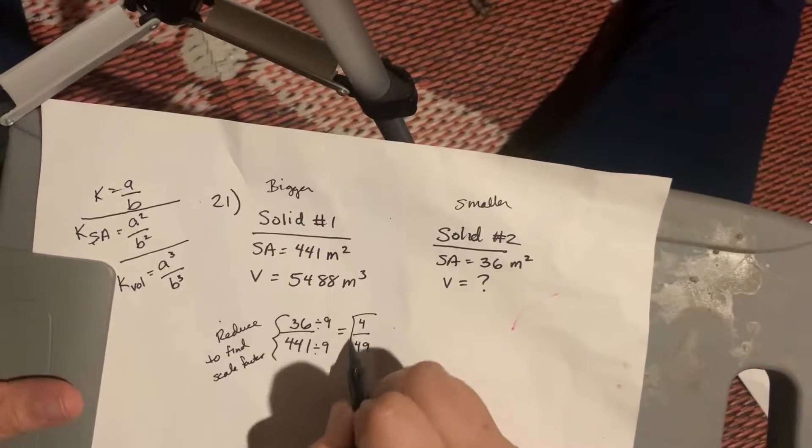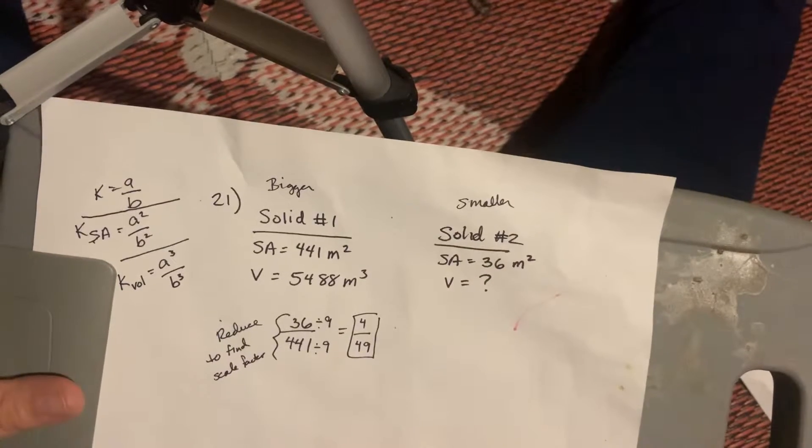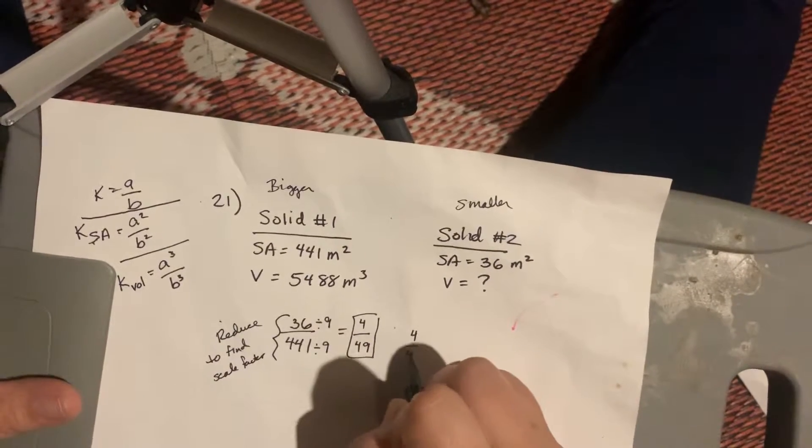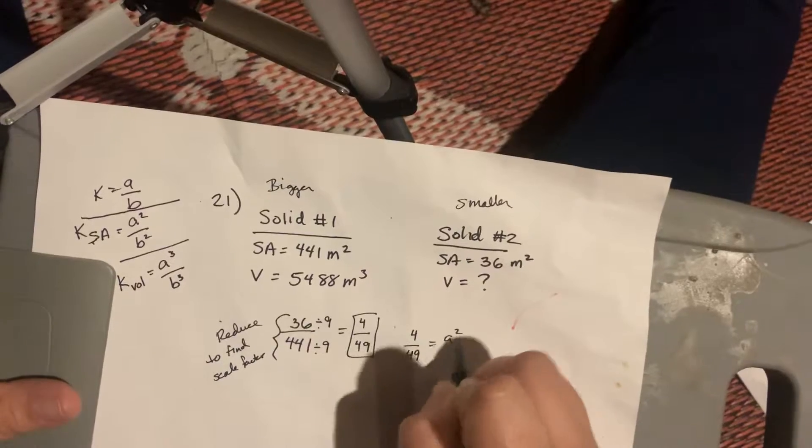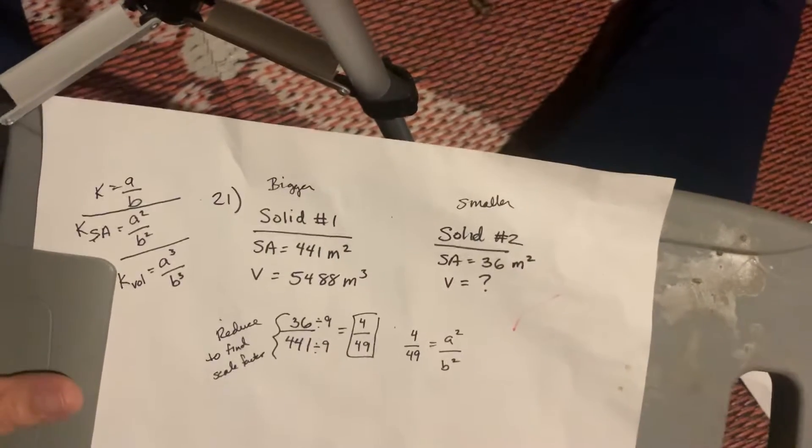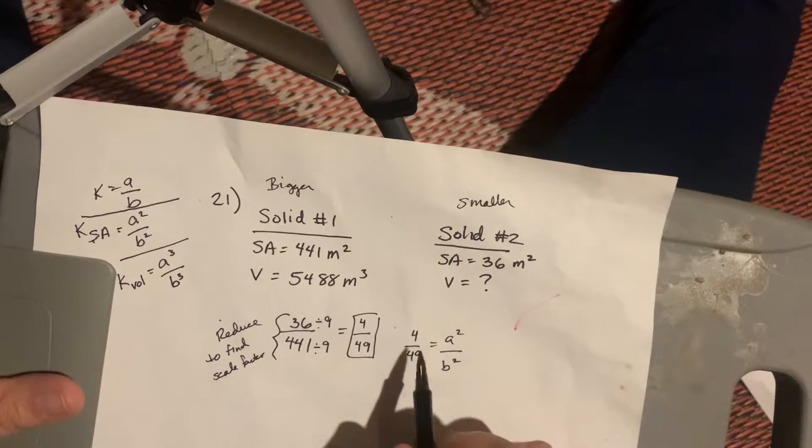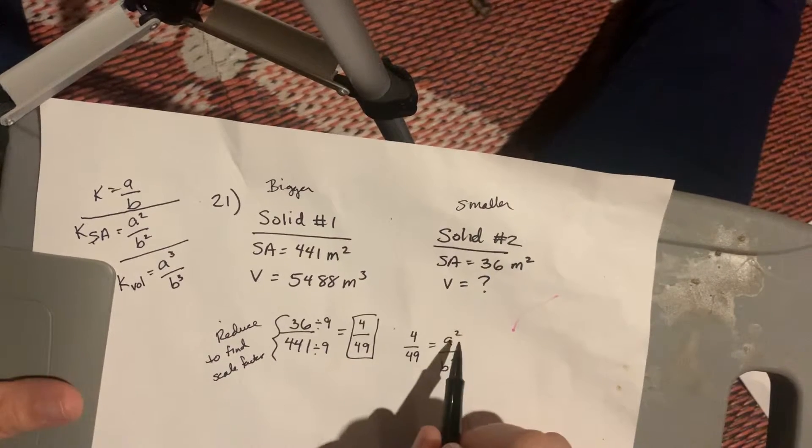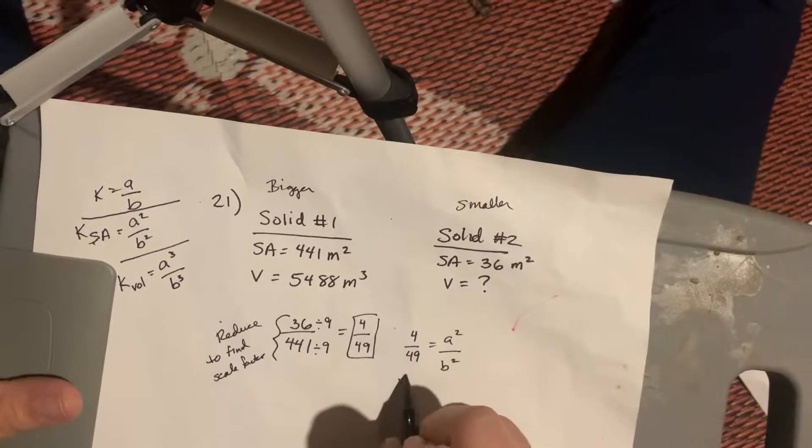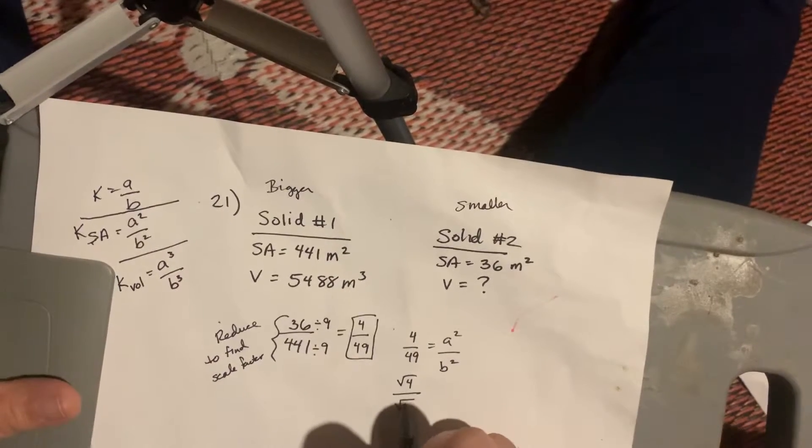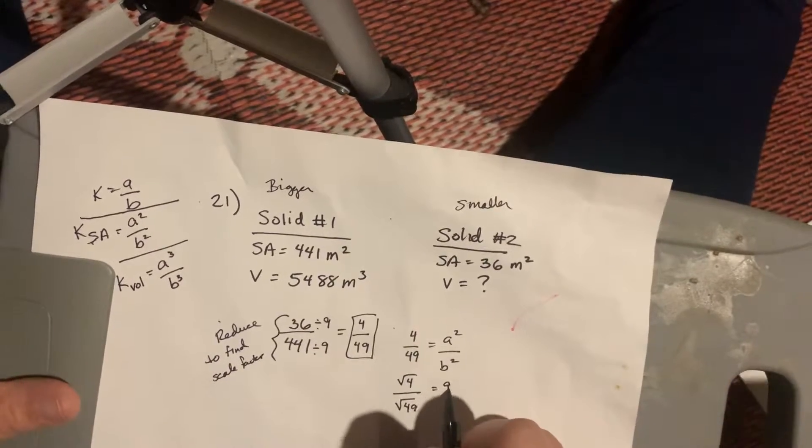And, so, this is our surface area scale factor. So, that means 4 over 49 is our A squared over B squared. But, I need A over B so that I can figure out the volume scale factor. So, in order to figure out what A is from A squared, I have to square root it. So, square root of 4 over the square root of 49 is going to tell me what A over B is.